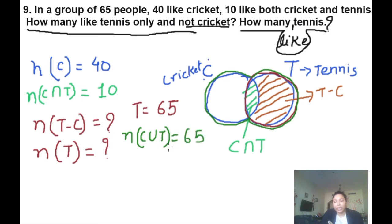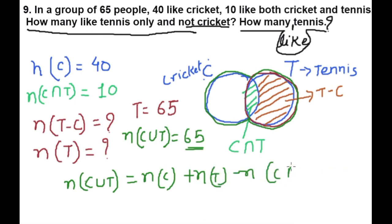At least every people like one game, cricket or tennis, that is 65. Our formula is n(C union T) is equal to n(C) plus n(T) minus n(C intersection T). So n(C) we have 40.